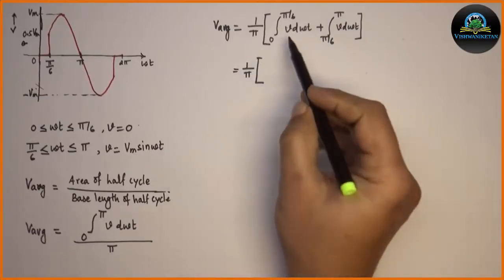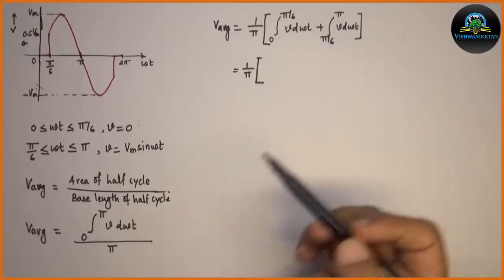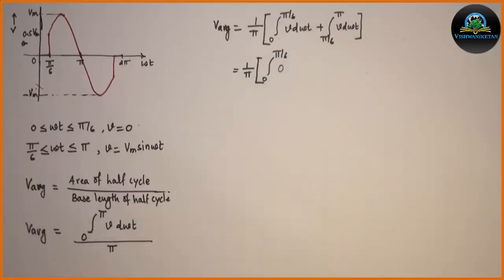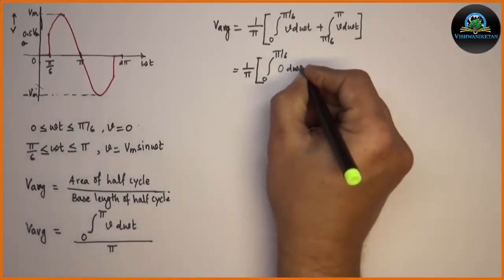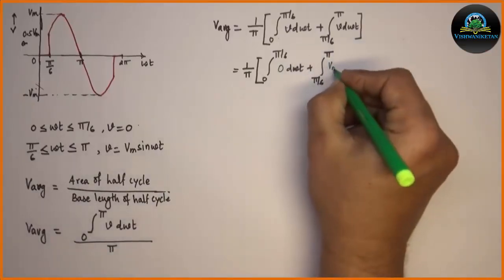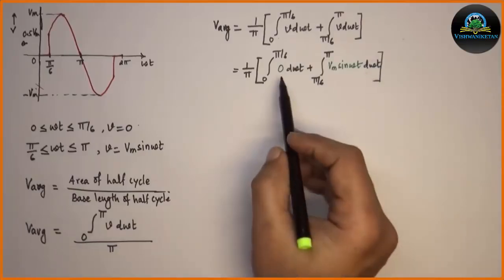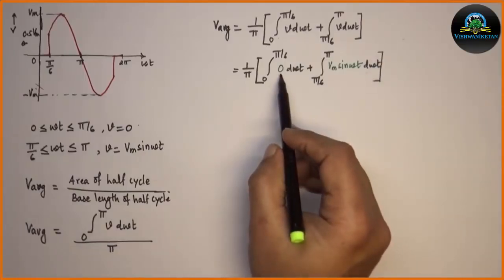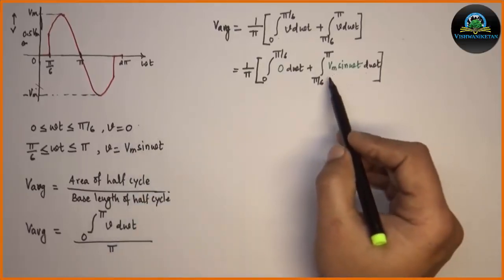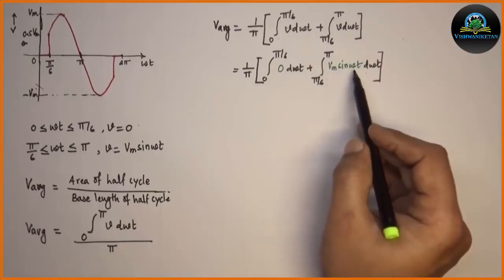For first interval the value of V is 0 and for second interval that is pi by 6 to pi, the value is Vm sin omega t.